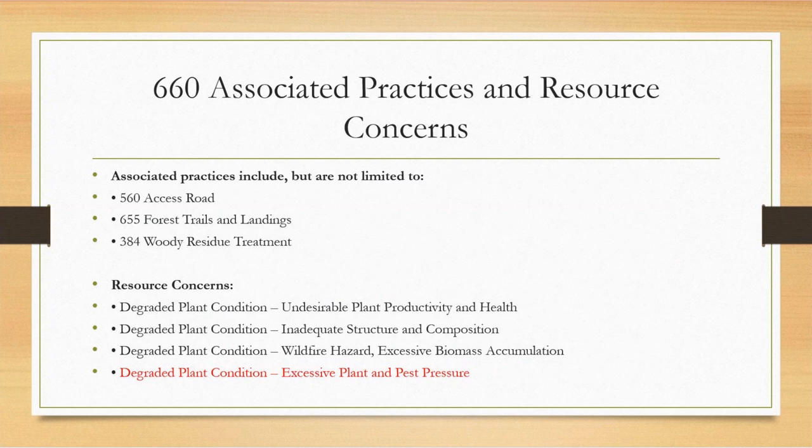Practice 660 has some associated practices I won't cover in this conversation. The resource concerns are undesirable plant productivity and health, inadequate structure and composition, wildfire hazard, and excessive biomass accumulation. And when we're talking about oak wilt, it's going to be excessive plant and pest pressure.